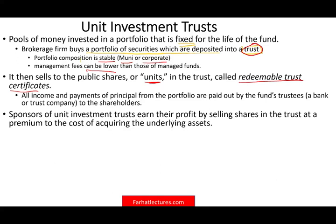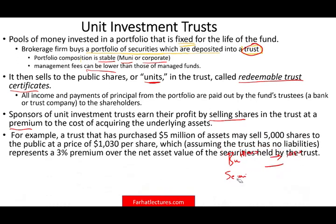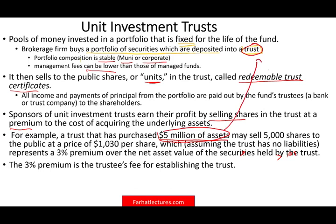The sponsor earns their profit by selling shares in the trust at a premium to the acquisition cost. For example, if they invested $1,000 per share, they may sell at $1,030, making a $30 profit. A trust that purchased $5 million worth of assets may sell 5,000 shares to the public at $1,030, while the cost was $1,000 per share — that $30 represents a 3% premium, which is the fee for establishing the trust.